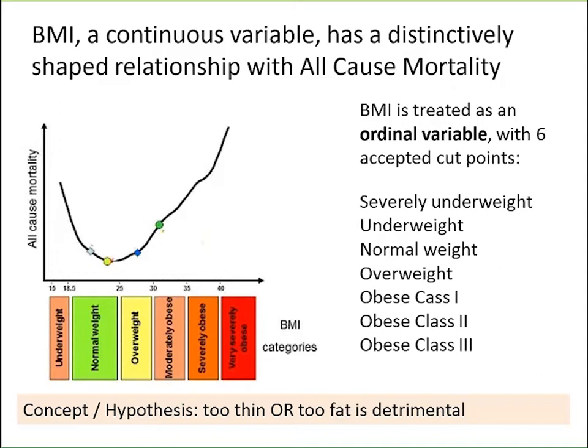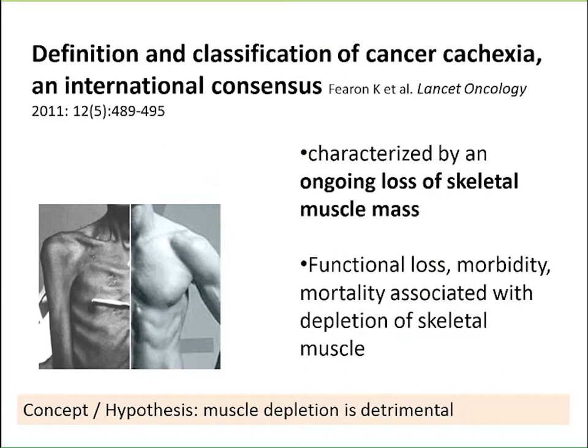Now we're getting into the business of taking body mass and dividing it into its component parts, one of which is muscle. I highlight this paper — a large rumination by people interested in cancer cachexia in a clinical setting. They have a nice way of articulating that cancer is associated with loss of muscle mass. Their concept is to pin on loss of muscle mass the functional loss, the morbidity, and the mortality associated with progressive malignant disease. So they have a hypothesis: muscle depletion is detrimental, and low muscle mass should be bad. There's nothing in this conceptual framework that suggests, like overall body weight, that you could have too much muscle.